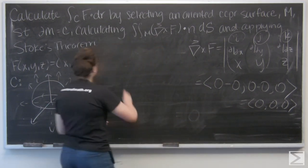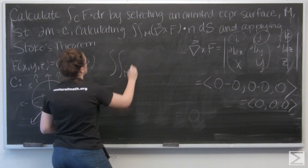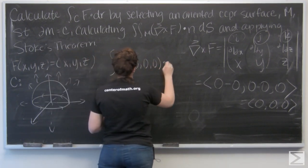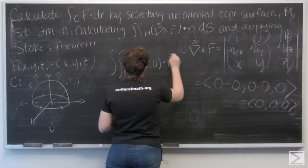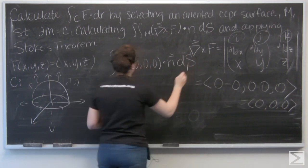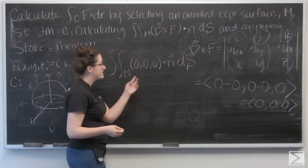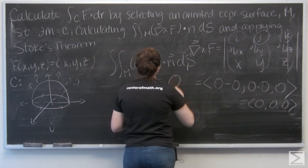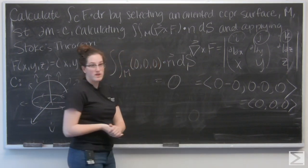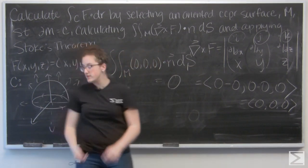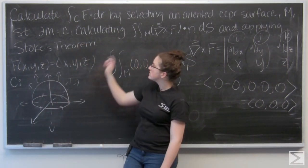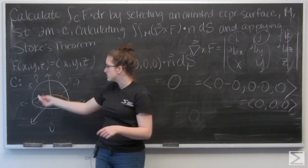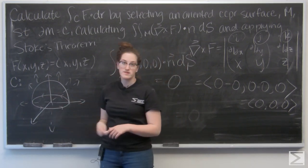So I'm essentially integrating zero, which is just zero. The flux of F through this hemisphere M is zero, and that also means that the line integral of F along this circle C is zero as well.